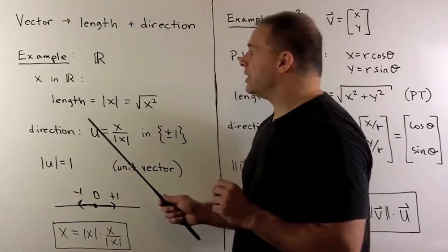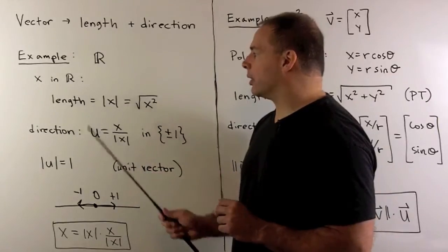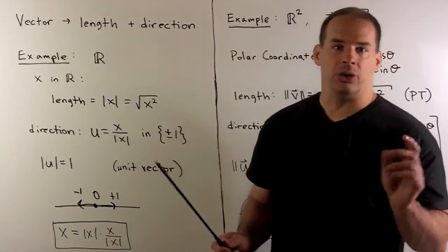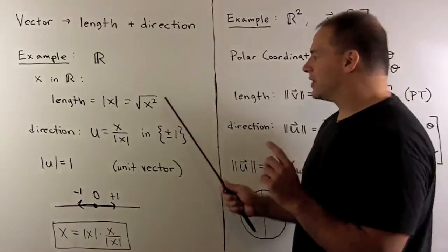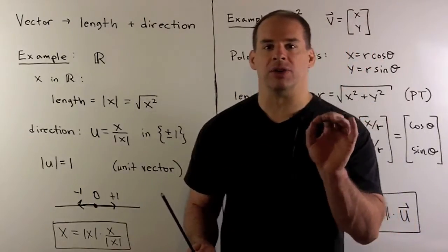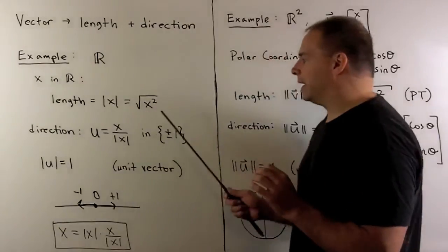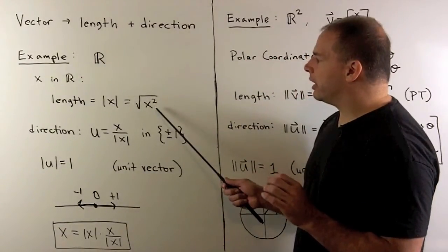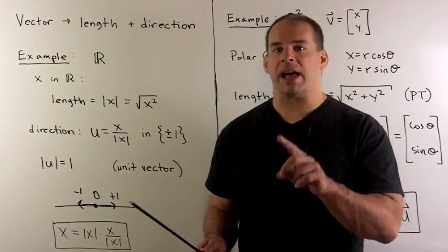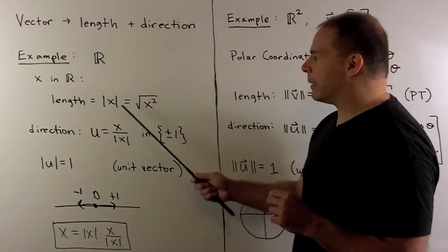Start with the base case, the real numbers. If we take any x in the real numbers, the length is going to be given by just taking the absolute value. We can rewrite this as the square root of x squared — that'll be consistent with our general definition. If we put a negative number in here, we square it, the negative goes away. When we take the positive square root, this returns a positive number, that's just going to be our absolute value.